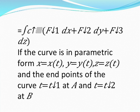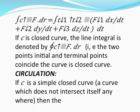If the curve is in parametric form x equals x(t), y equals y(t), z equals z(t), with endpoints t equals t1 at a and t equals t2 at b, then the integral over c of f-bar dot dr equals the integral from t1 to t2 of (f1 dx/dt plus f2 dy/dt plus f3 dz/dt) dt. If c is a closed curve, the line integral is denoted with a closed curve symbol, where the two endpoints coincide.